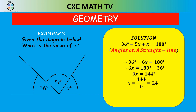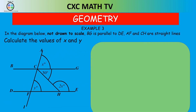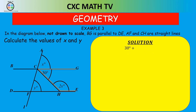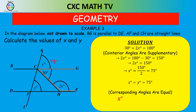Let's step up the difficulty. In this diagram BG is parallel to DE, and AF and CH are straight lines. Calculate the values of x and y. First we use co-interior angles: 30 plus 2x equals 180. Transposing, 2x equals 150, so x equals 75 degrees. Then, since corresponding angles are equal, y is also 75 degrees.